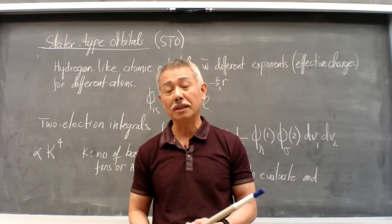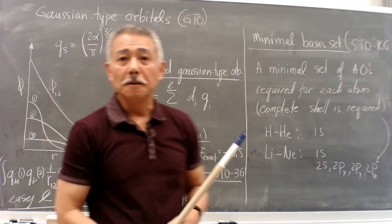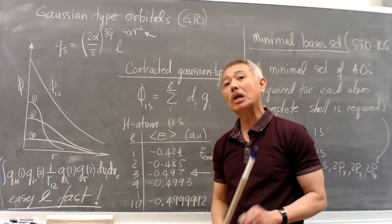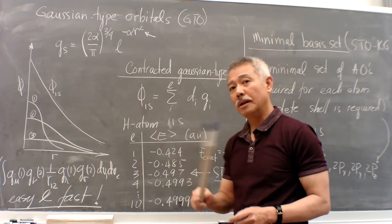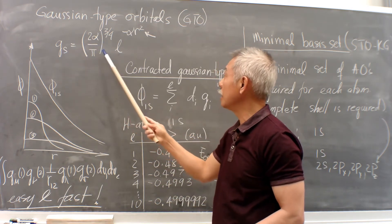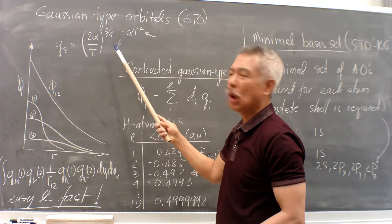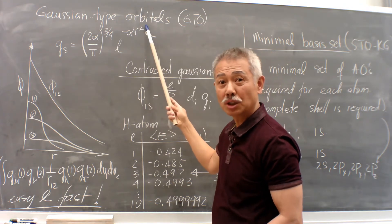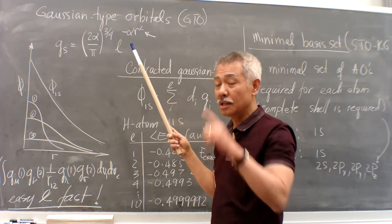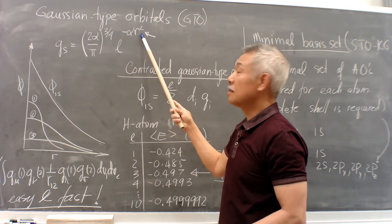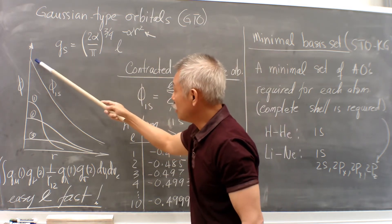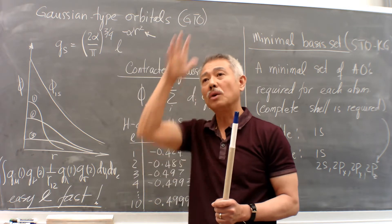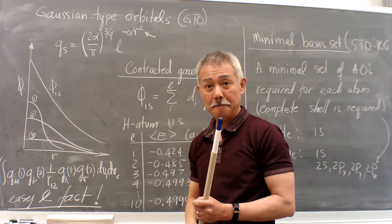We need to find a better way to represent these atomic orbitals. The idea is to use Gaussian functions — Gaussian-type orbitals. The Gaussian S function, for example, has a coefficient times a normalized function, e^(-αr²). This is the Gaussian function — it's r squared. Remember the Slater function is e^(-r). Because of the r² in the exponent, the Gaussian drops to zero faster than the Slater-type orbital.